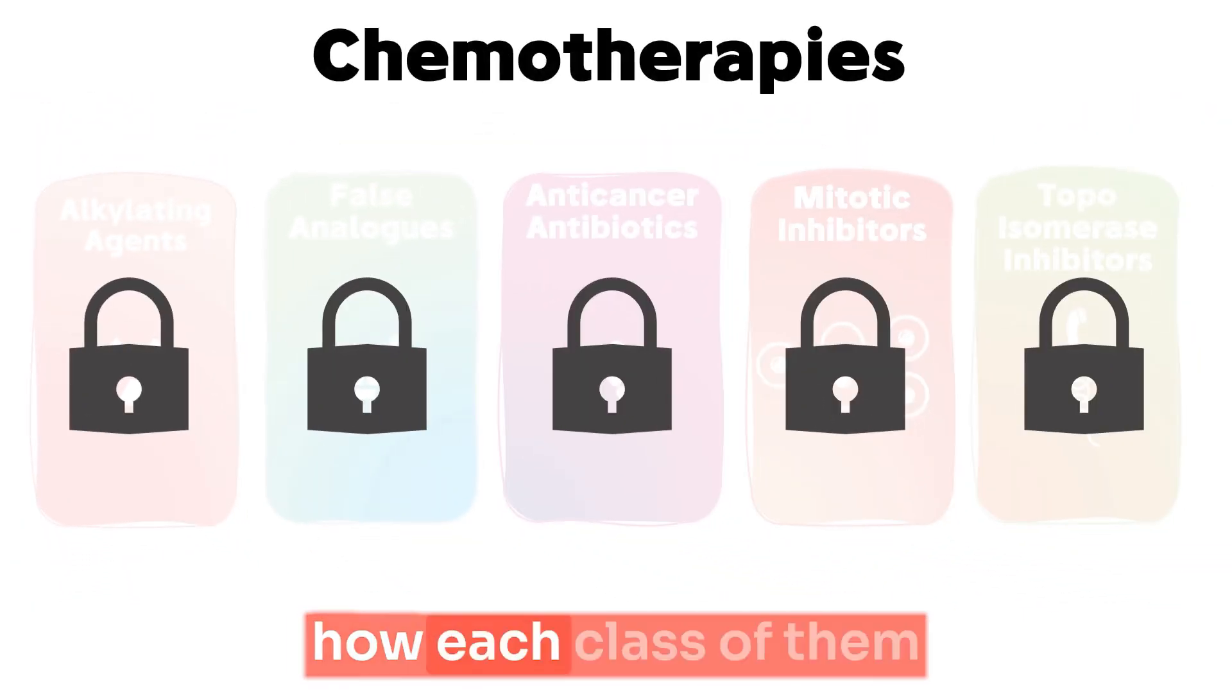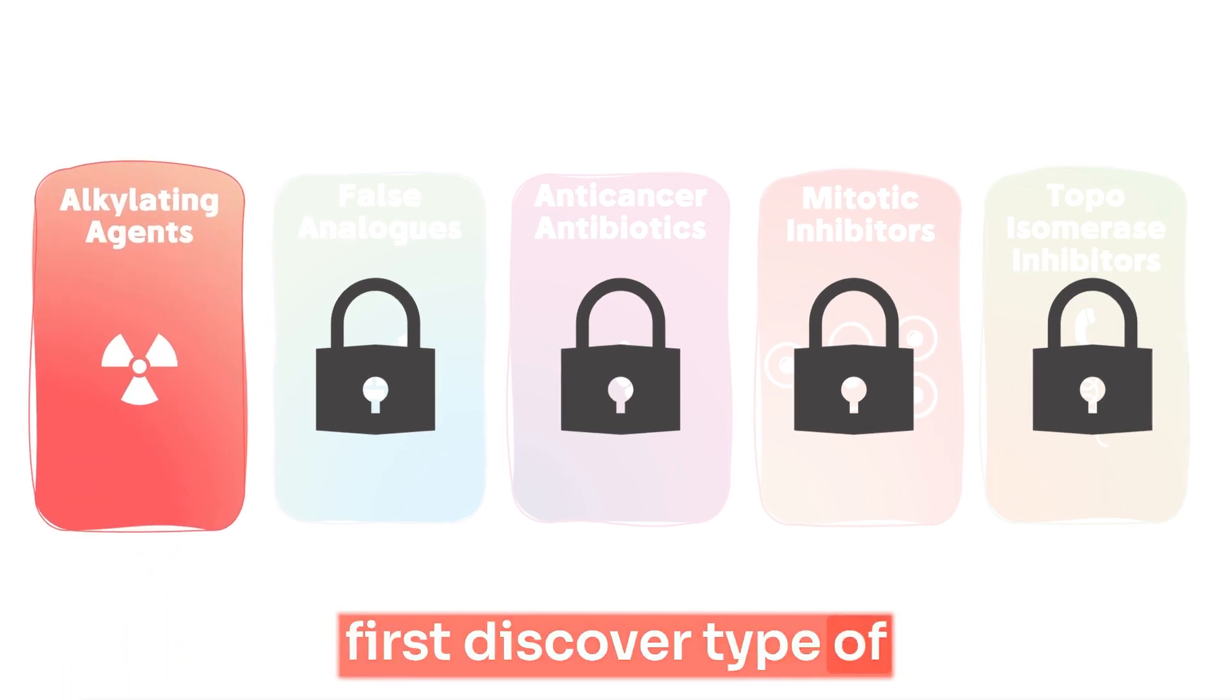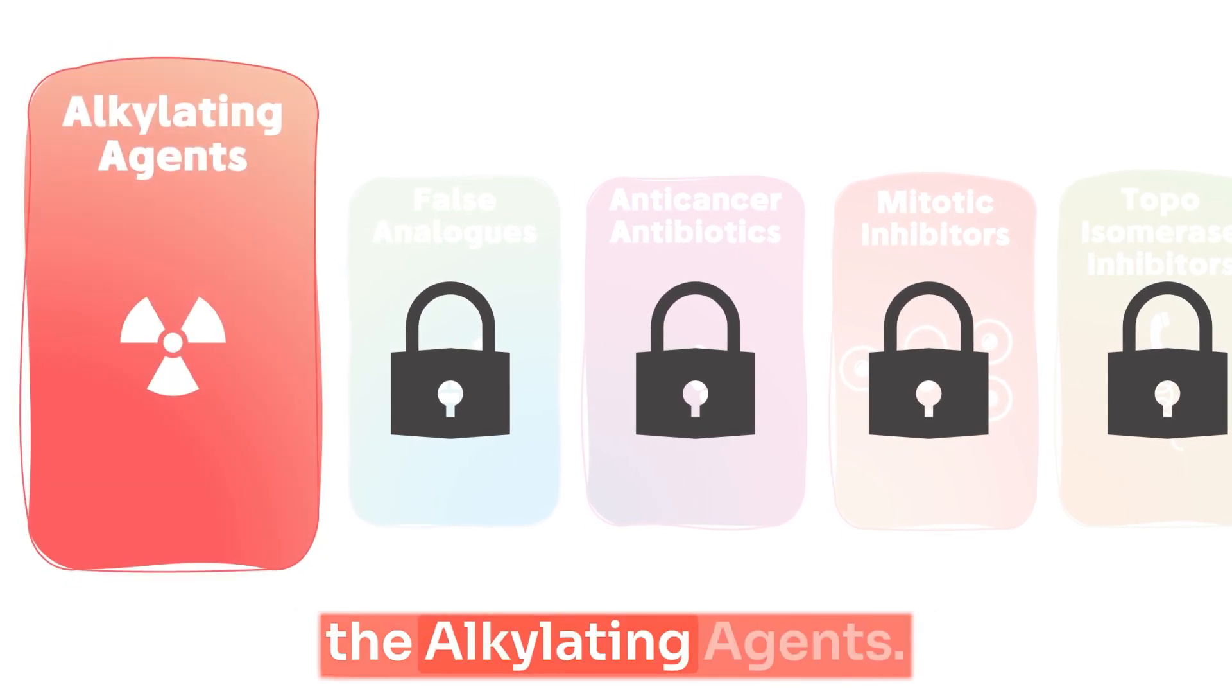In the coming 5 minutes, you will know the history of the 5 types of chemotherapies, how each class of them was discovered, and how does it function on a molecular level. So let's begin with the first discovered type of chemotherapy, which is the alkylating agents.